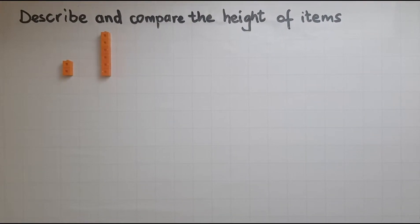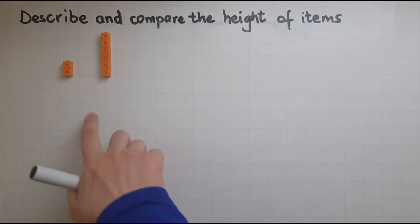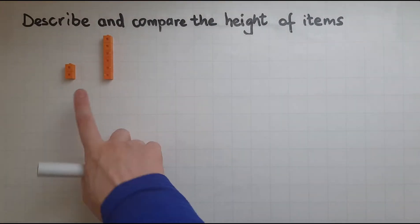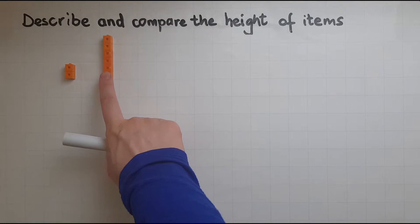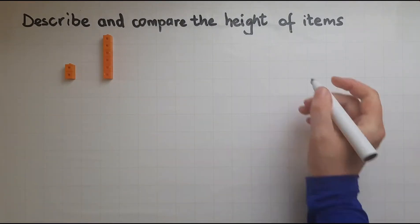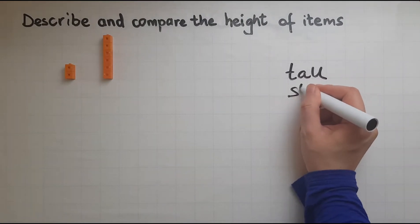In this video I'll describe and compare the height of items. I have two blocks or towers of cubes, and if I want to describe the height I would say this is the tall one and this is the short one. So two key words are tall and short.